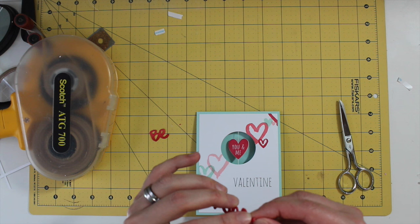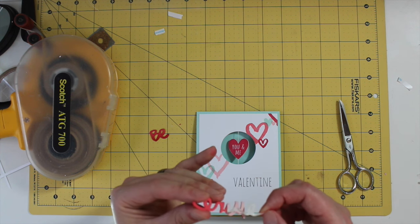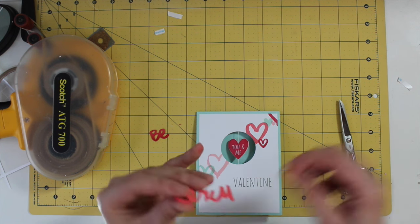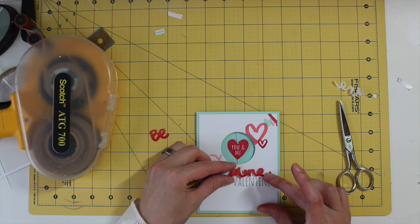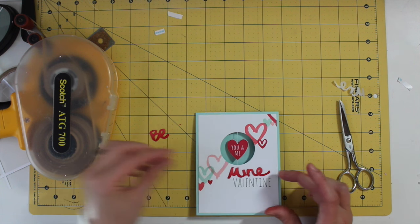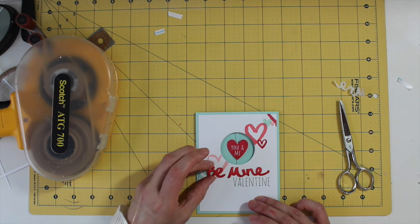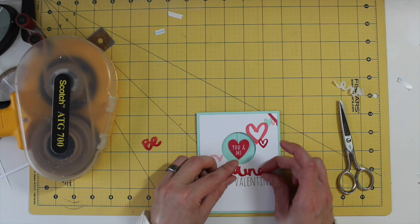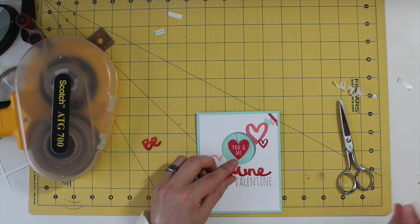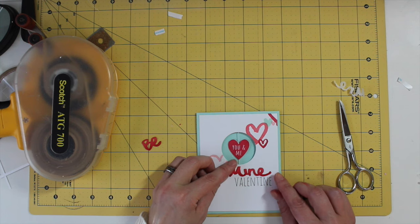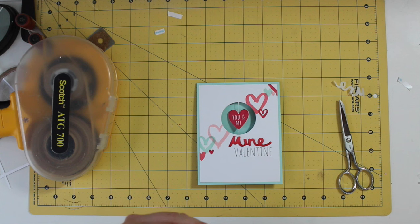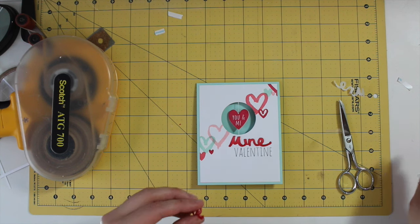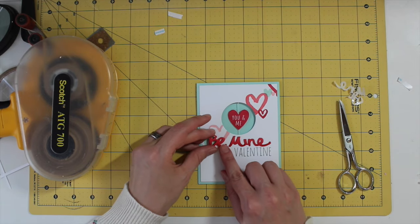So I'm going to peel off the adhesive backing I have here on these die cuts and get those stuck down now that the hard part's over. Make sure it's nice and centered once the whole phrase is there together. Push it down, make sure it's secure. And the second piece.